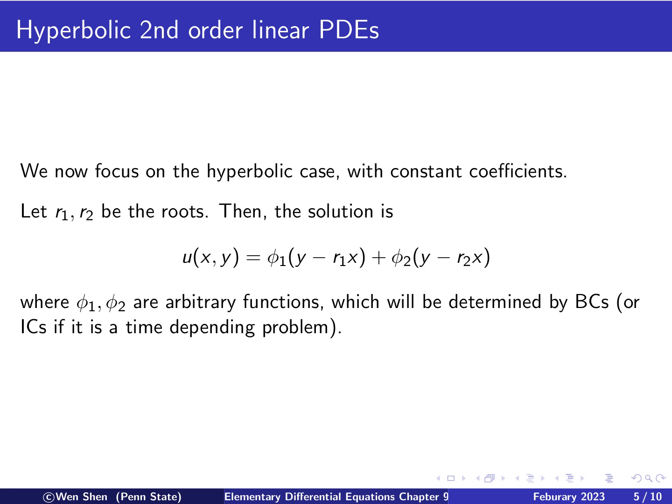Focusing on the case where the equation is of hyperbolic type, with constant coefficients. Let now r1 and r2 be the roots, and they are real and distinct. Then, we can write out the solution. So, the solution will be a function phi1, which is a function of y minus r1x, and another function we call phi2, which only depends on y minus r2x. And here, phi1, phi2 are arbitrary functions. And they will be determined eventually by boundary conditions, or initial conditions, depending on the problem you have, if it's time-dependent or not.